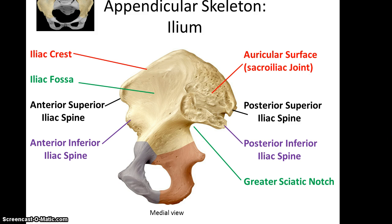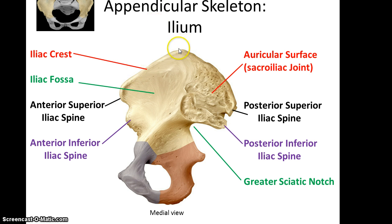On the anterior end of the ilium you have the anterior superior iliac spine and the anterior inferior iliac spine. Again, even though the names are long, they're just telling you directionally where those spines are located. Also along the superior edge of the ilium is the iliac crest, which attaches to a number of the abdominal muscles, and then below that the iliac fossa.